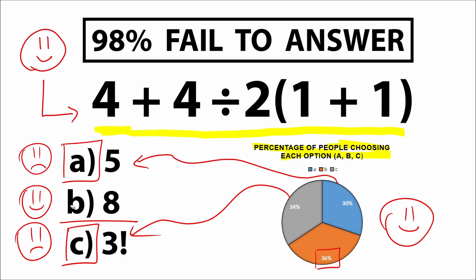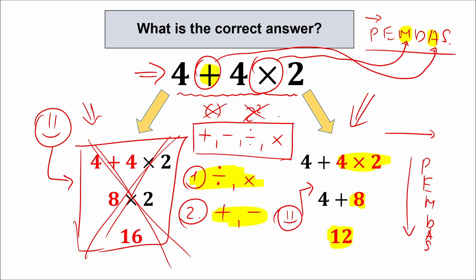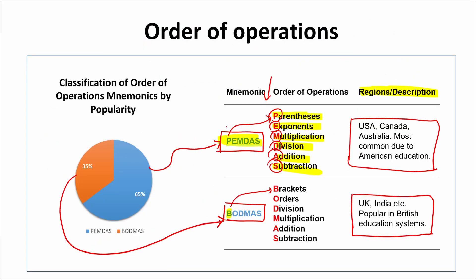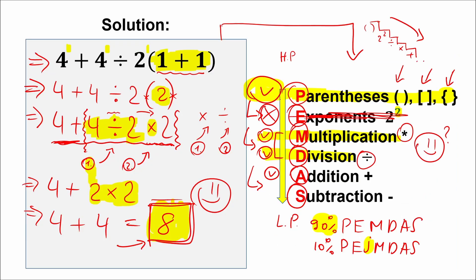We really hope you understand this quick lesson. According to this poll, a lot of students solve this question the wrong way. Every time you have this type of question, think about order of operations. I can solve this in different ways, but to solve it correctly I need to know order of operation. Every time you have a numerical expression, just draw this quick checklist on the right side and solve it in the correct order.